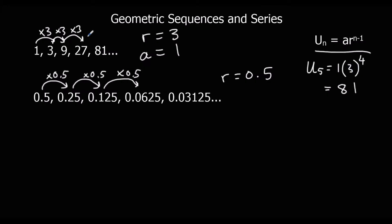And as you can see, the fifth term is 81. So we can use this nth term formula to work out any term in the sequence. If I wanted to work out the tenth term or the hundredth term, I could do so by substituting into the formula.